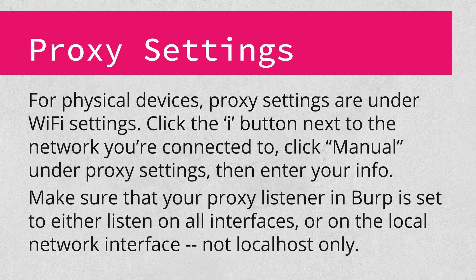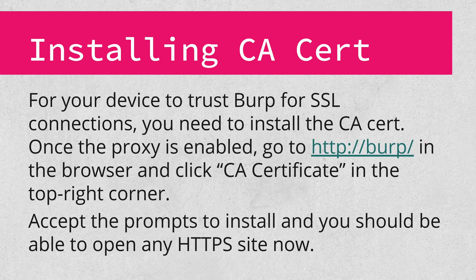For physical devices, proxy settings are under the Wi-Fi settings. Simply click the eye next to the network you're connected to, then click Manual under HTTP proxy settings, then plug in the info for your proxy. Do make sure that Burp is listening either on all interfaces or on the local network interface — if it's on localhost only, your device won't be able to talk to it. I also suggest disabling cell service while using a proxy, so you don't miss any traffic. Installing the CA cert is one area where iOS testing is way easier than Android. Once your proxy is set up, go to http://burp and click the CA certificate link in the top right corner, follow the prompts, and you should be able to open any HTTPS site with no problem.